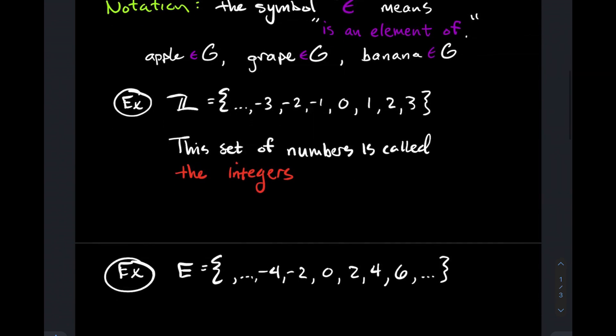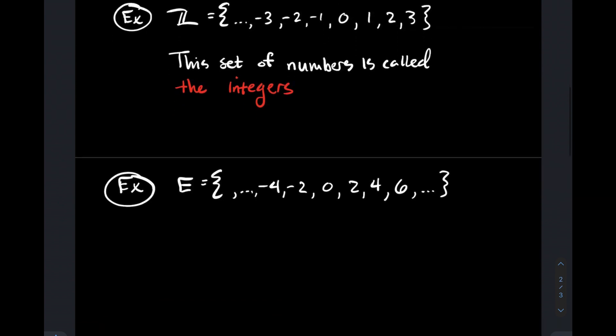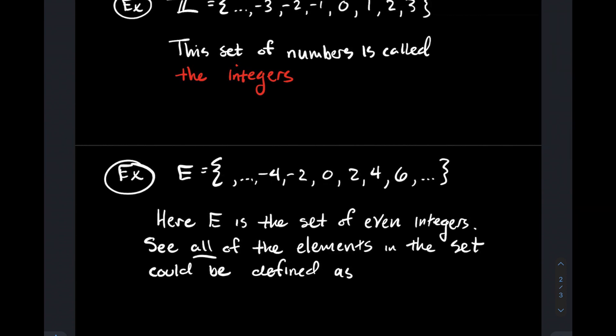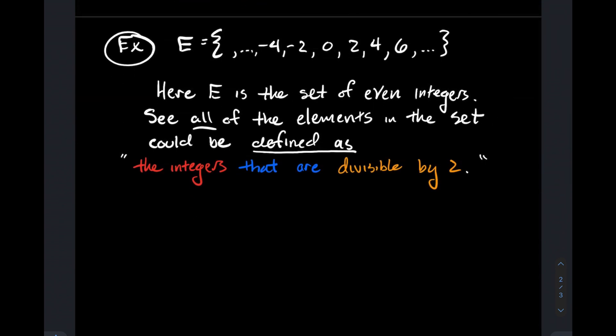Let's look at another example where you see a common way to denote sets is by listing the elements. So E looks similar to Z above, where I'm taking the even integers, and yes, zero is even. So E is the set of even integers. If I look more closely at them, there's another condition that all the numbers in that set satisfy. All the elements could be defined as the integers that are divisible by 2.